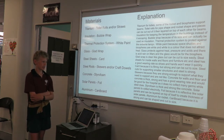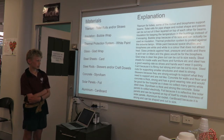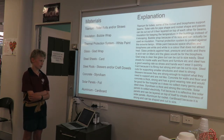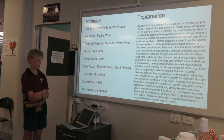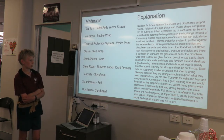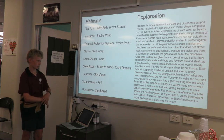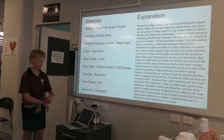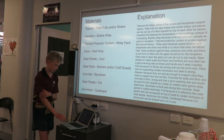Styrofoam is thick and strong like concrete. Solar panels collect electricity. Foil is reflective like solar panels and can be laid on top of itself to create the thickness of solar panels. Aluminium for a rocket — cardboard because it is strong and can be shaped to size.